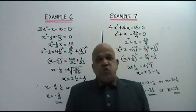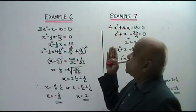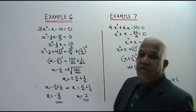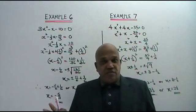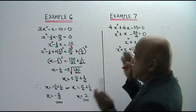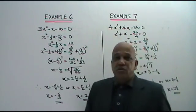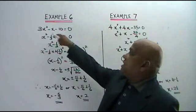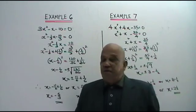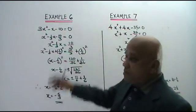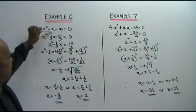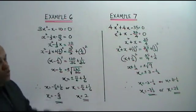Welcome to another two questions on quadratic equations. Example 6 and 7. Again, you are asked to solve these quadratic equations by completing the square. Let's see how we do. Example 6: 3x squared minus x minus 10 equals to 0.